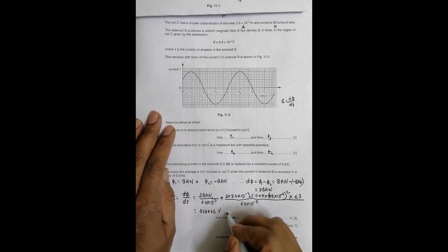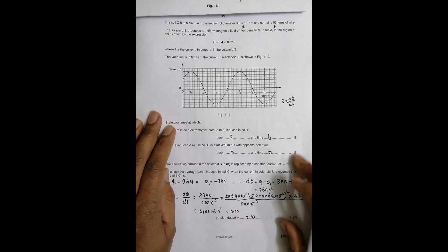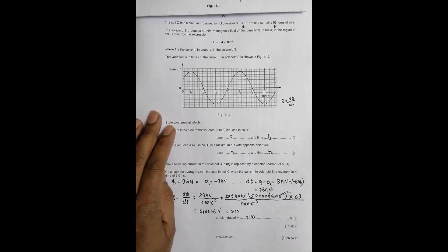This becomes equal to 0.10046 volts. When I write to 2 significant figures, it will be 0.10. If I write 3 significant figures, it will be 0.100. So the answer is 0.10 volt. This is the correct answer.